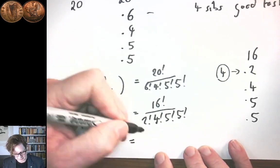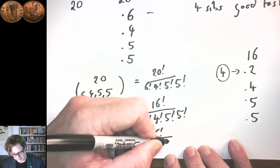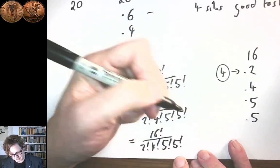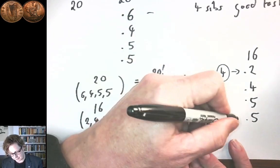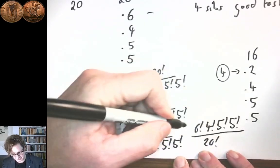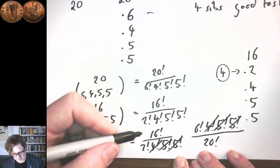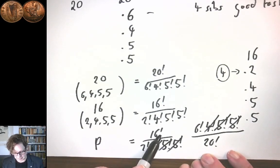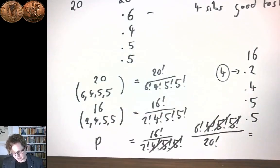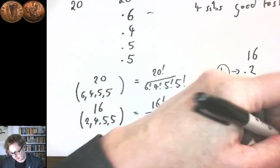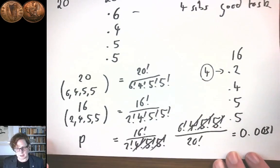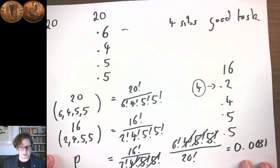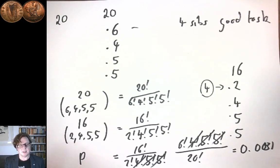So the probability of this assignment happening by chance equals 16! / (2! × 4! × 5! × 5!) divided by 20! / (6! × 4! × 5! × 5!). The 4! × 5! × 5! factors all cancel, and then you can cancel most of 20! with the 16!, so you just need to multiply 20 × 19 × 18 × 17 rather than computing 20! directly. When you do all of that, you end up with approximately 0.0031. So that's the probability that this apparently unfair assignment happened by chance — in other words, the workers were correct to accuse the gaffer of cheating. The chance that this was a random assignment is actually very low.